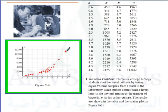The x-values represent hours and y represents bacteria count. If x is 0.6 hours, then the number of bacteria present would be 450. At 0.8 hours, 446 — and so on. As you can see, the number of bacteria increases as time passes. At 8.6 hours, you have 11,042 bacteria.